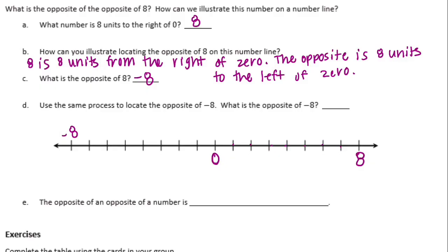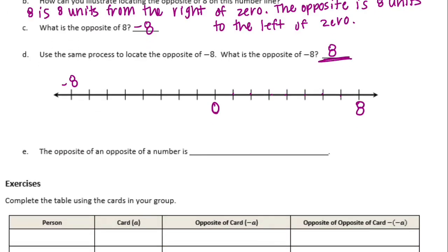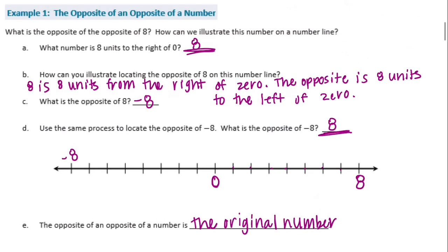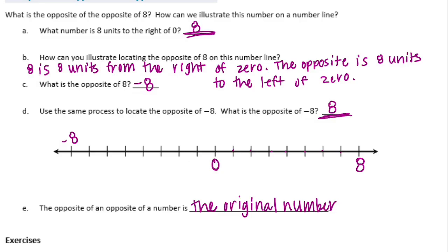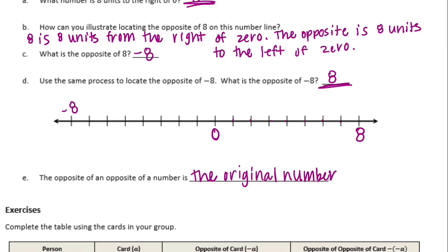Now use the same process to locate the opposite of negative 8. The opposite of negative 8 is 8 — we go back to 0 and then that many in the opposite direction. Notice we started with the same number: the opposite of an opposite number is the original number. This is important for when we start adding and subtracting negative numbers, multiplying them, and talking about absolute value.